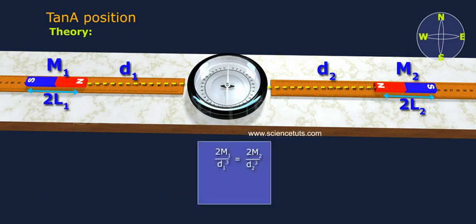2M1 by D1 cube equals 2M2 by D2 cube. Therefore, M1 by M2 equals D1 cube by D2 cube.